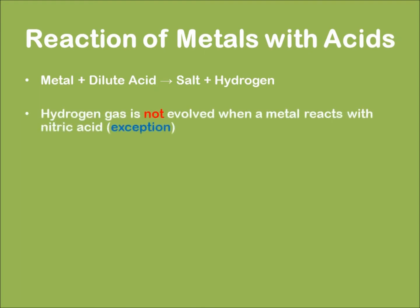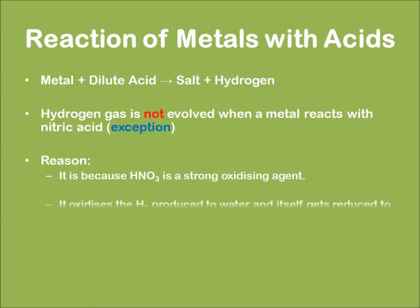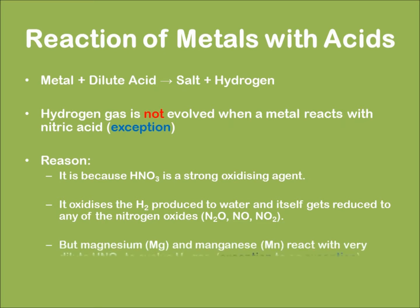Hydrogen gas is not evolved when a metal reacts with nitric acid — this is an exception. The reason is that nitric acid is a strong oxidizing acid; it oxidizes the hydrogen produced to water and itself gets reduced into nitrogen oxides. However, magnesium and manganese react with very dilute HNO3 to produce hydrogen gas, which is a special exception.